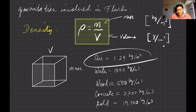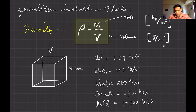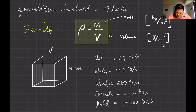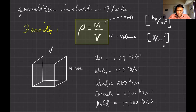Wood is less dense than water — there is air in its spaces. Concrete is denser than water. Gold is one of the densest known materials — it's quite heavy for a small volume. You can find density values for other substances on the internet.